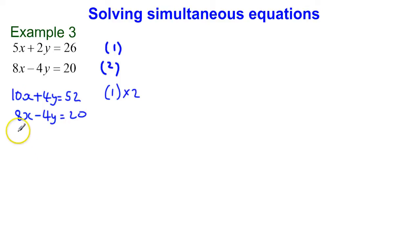So we've got 10x plus 8x, which gives me 18x. Positive 4y, add a negative 4y, gives me 0y, and that's why I chose to add them together. And then I've got 52 plus 20, which gives me 72.